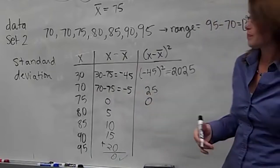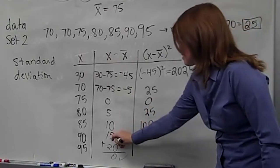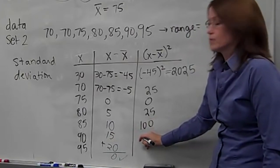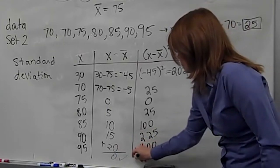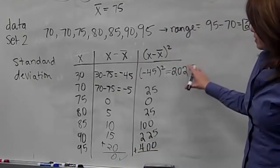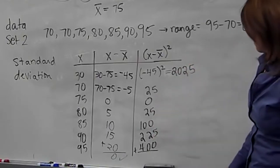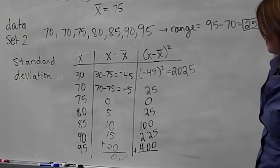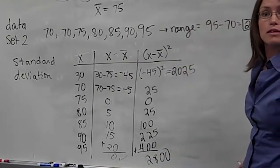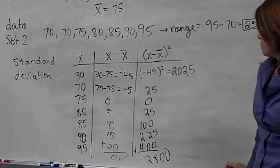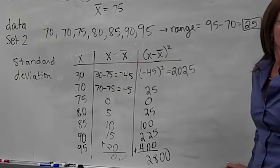Zero squared is zero; 5 squared is 25; 10 squared is 100; 15 squared is 225; and 20 squared is 400. This column needs to be added up once you have all your zero or positive answers. The sum of that column is 2800. Double-check carefully — if you type one number wrong it's going to mess everything up, so really watch what you're doing.